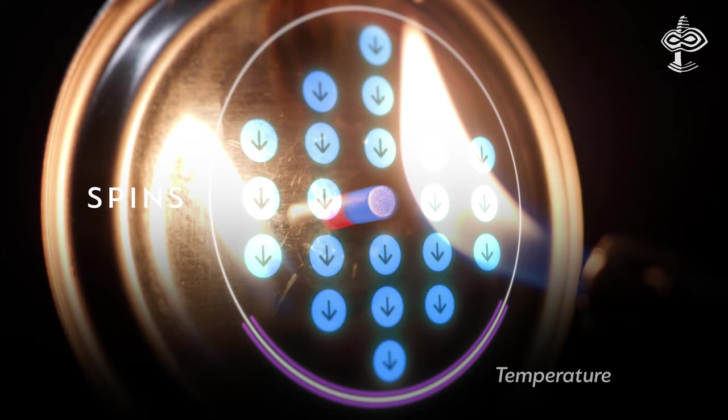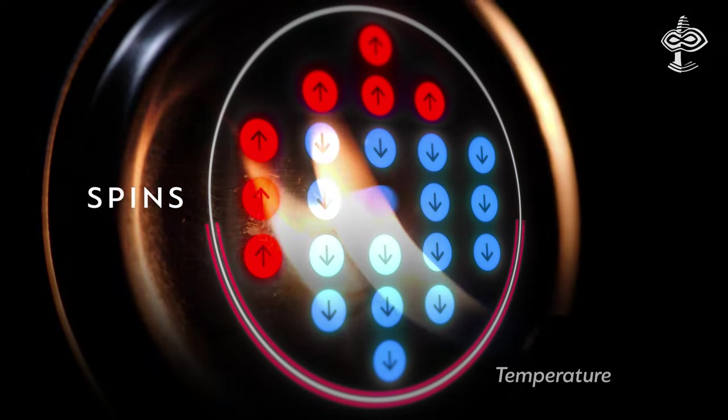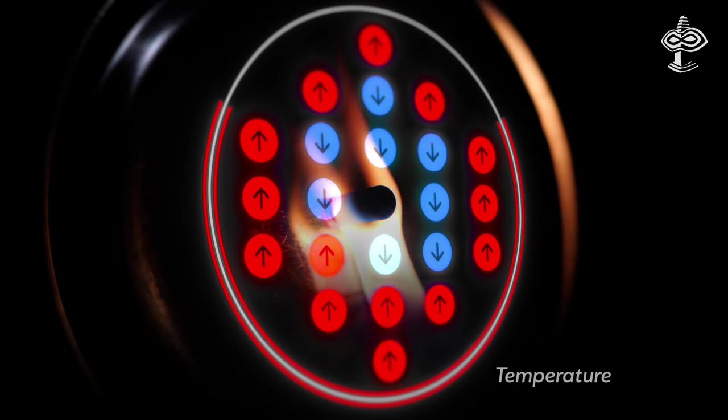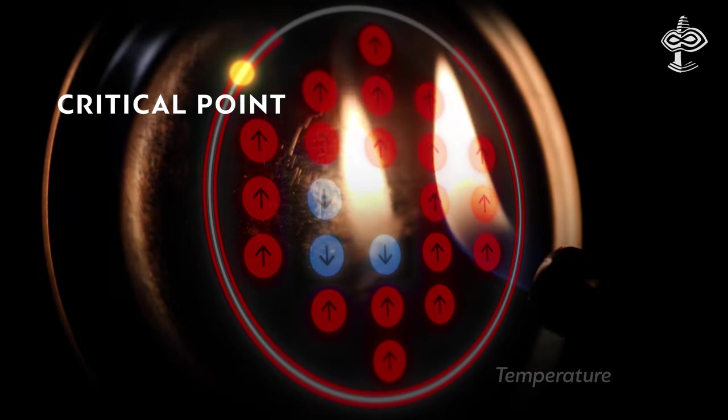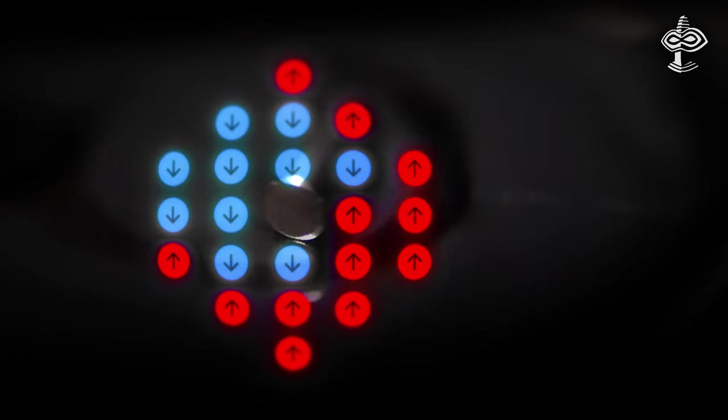When heated, the spins start to move, change direction, and cancel each other out. This causes the magnet to fall off the metal surface, indicating a transition from being ordered to disordered.